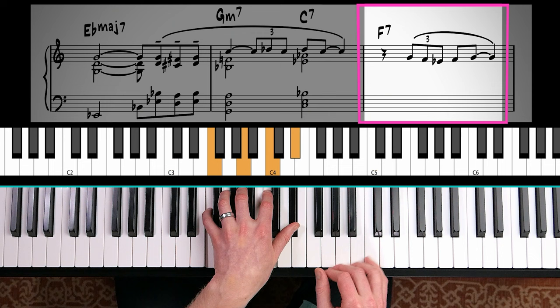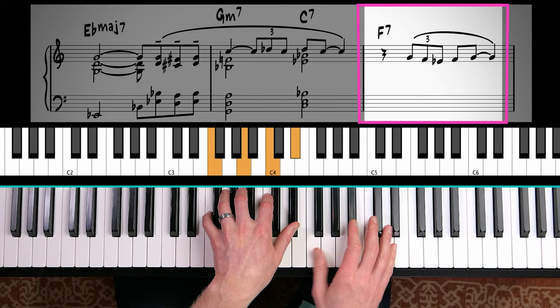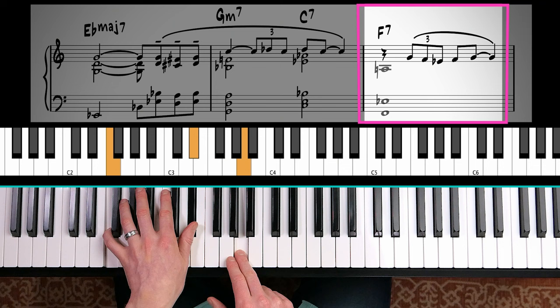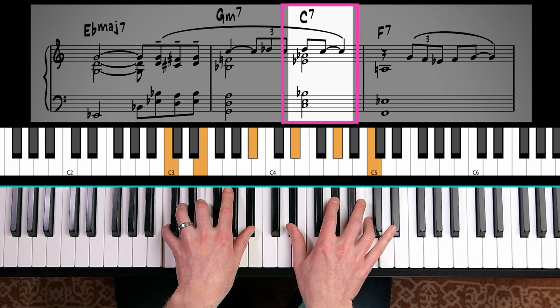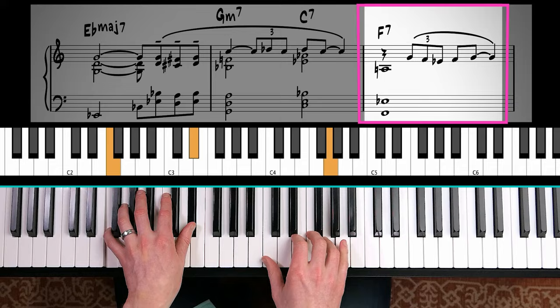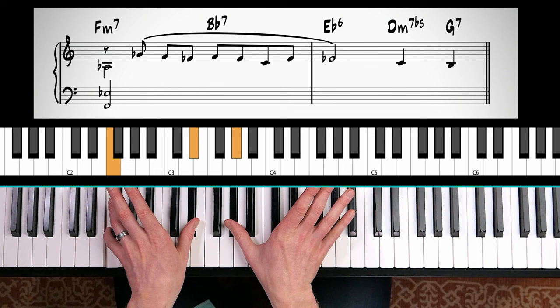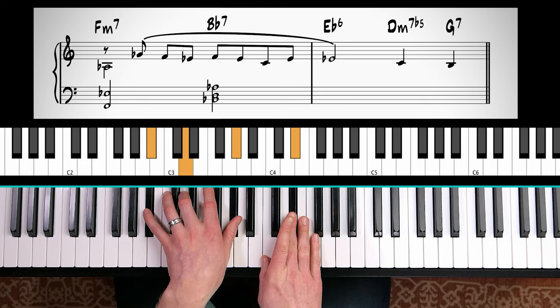Then we have an F dominant seven. Now we've just had a complicated section, so I'm not really looking to do more upper structures. We also want some simple sections. So maybe I'll just play a shell voicing here. That's fine with me. Becomes an F minor seven. Let's just go with a shell. Root seventh third. And I'm fine with that.